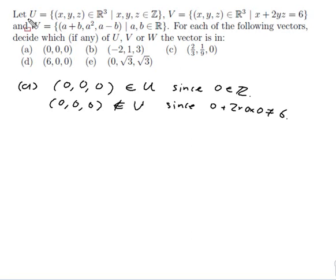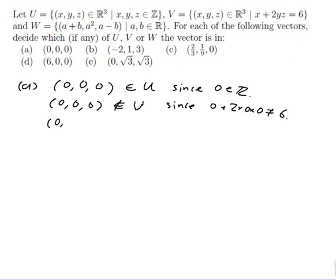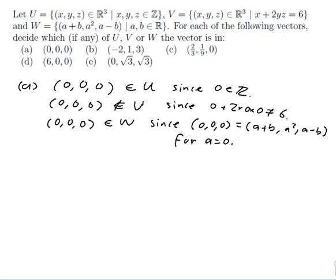Next we decide if it's in W. The way to tell if something is in W is if I can write it in the form (a plus b, a squared, a minus b) for some a and b in R. If we want this to come out as (0, 0, 0), we could just choose both a and b to be 0 and that would do it. So (0, 0, 0) is in W since it equals (a plus b, a squared, a minus b) for a equals 0 and b equals 0. Excellent — that's the first one done.